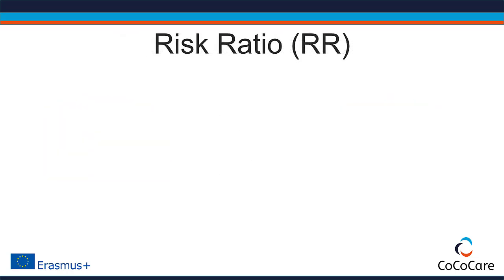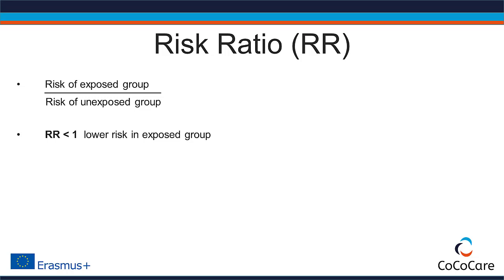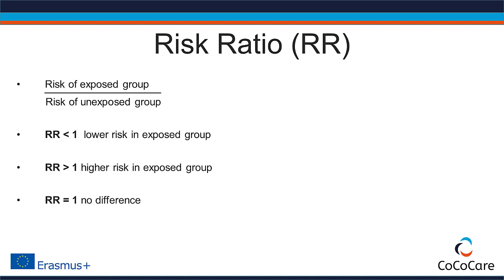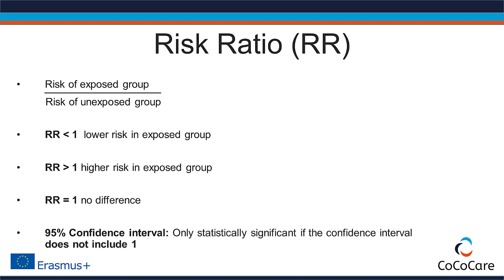First, we calculate the risk ratio, or the relative risk. This is the risk of the exposed group in relation to the unexposed group. A risk ratio below 1 means the risk for a certain outcome is lower for the exposed group than for the unexposed group. A risk ratio higher than 1 means the risk is higher for the exposed group — the exposure is a risk factor for the outcome. A risk ratio equal to 1 means there's no difference at all. In studies, every risk ratio comes with a confidence interval, which gives you the range in which the true risk ratio lies with a probability of 95%. The difference is only statistically significant if the confidence interval does not include 1.